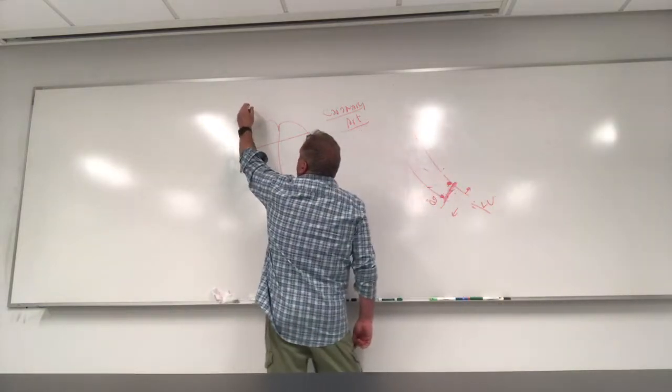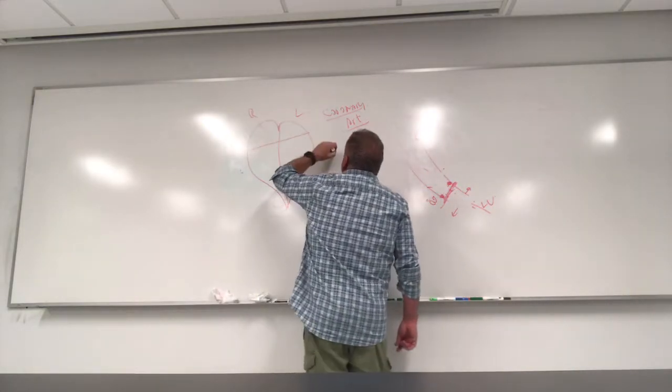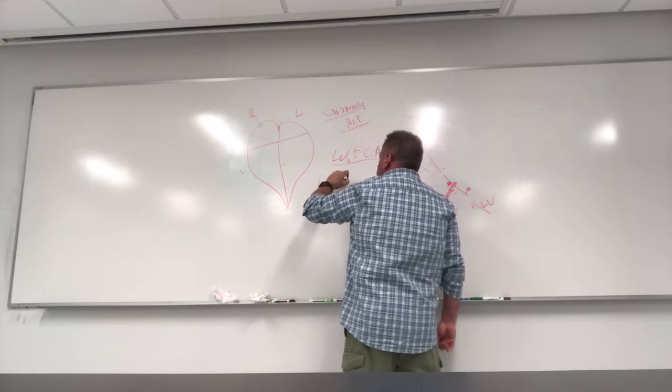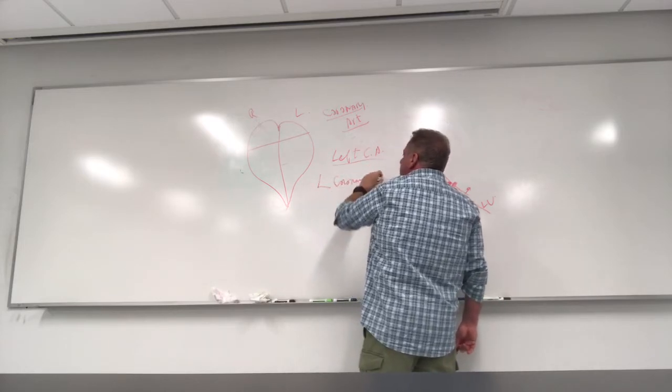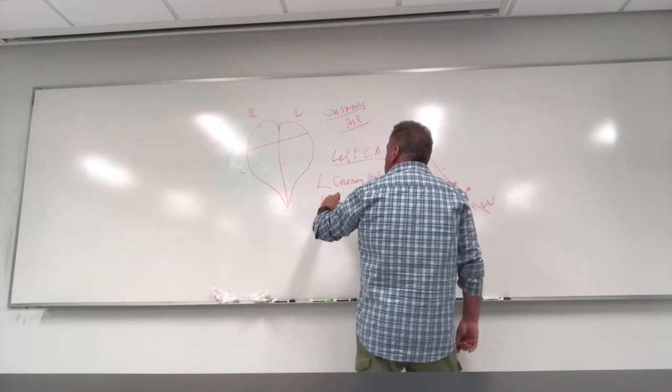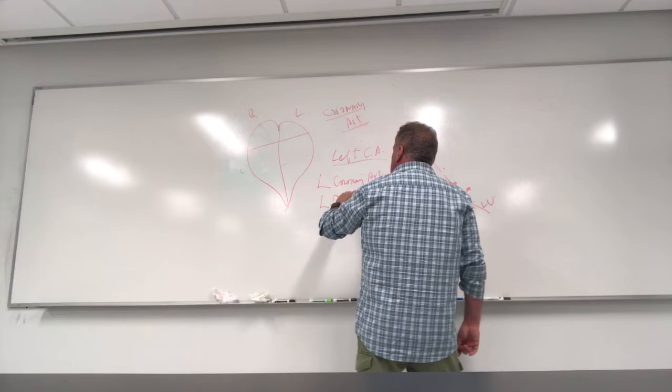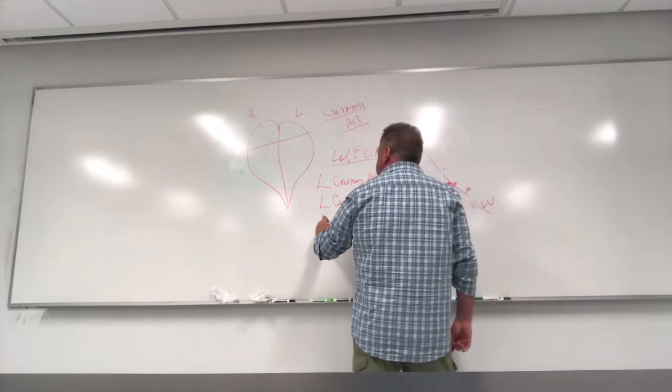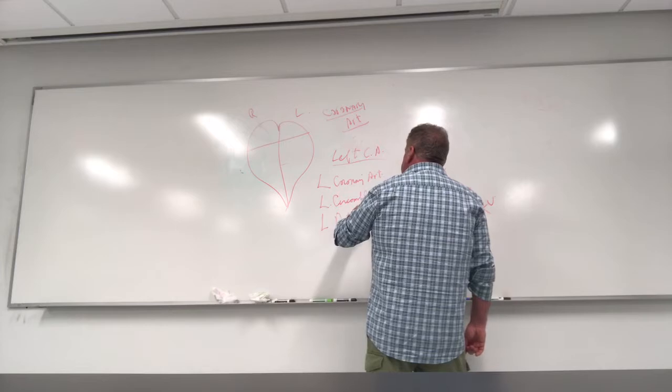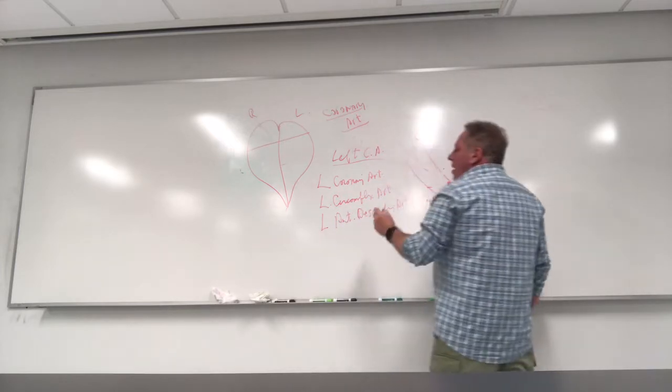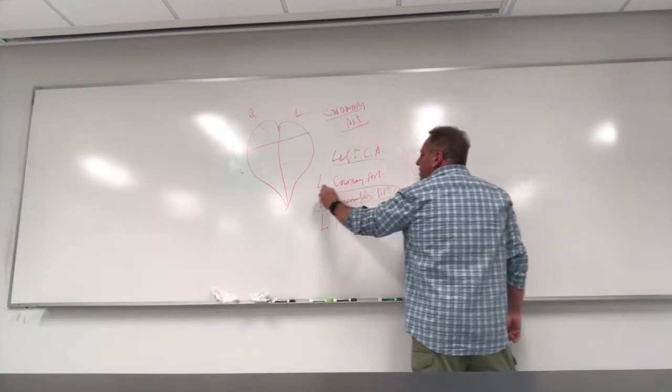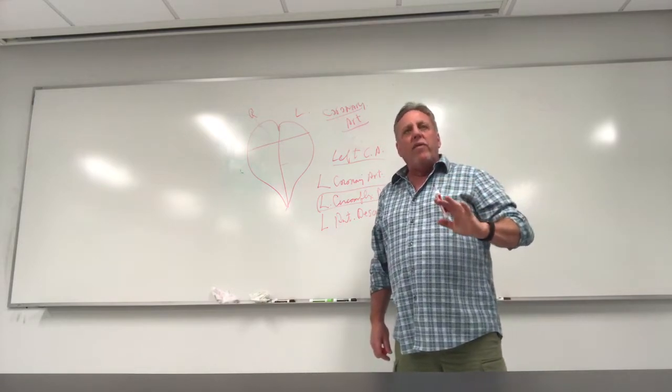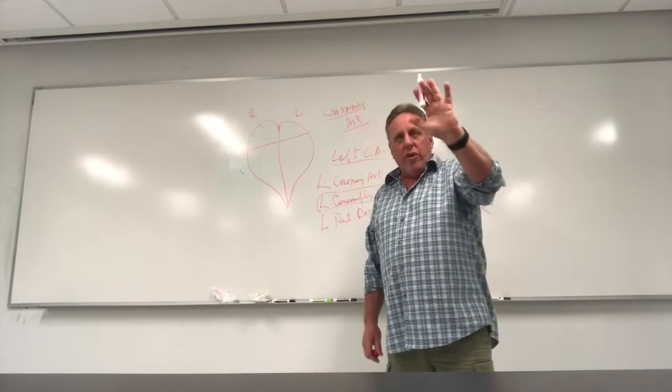The coronary arteries have a left and the right side. The left coronary arteries is the major one, the left coronary artery. And then it bifurcates into the left circumflex artery and then the left anterior descending artery. The left coronary artery will affect the posterior side of the left atrium and left ventricle, the posterior side.